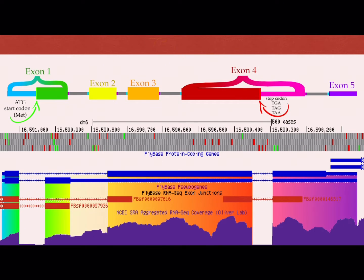The exons are indicated by the thickest boxes, which include both protein-coding regions and untranslated regions. Nearly immediately after transcription, the RNA transcript undergoes splicing, in which some of it is cut out and the remaining transcript — or exons — are pasted together.